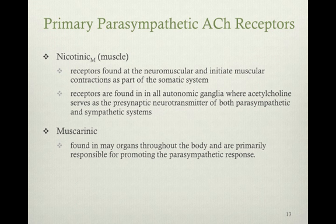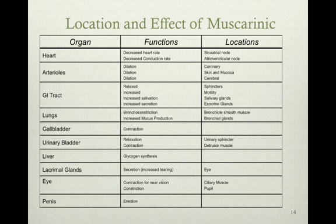Muscarinic receptors are found in many organs throughout the body and are primarily responsible for promoting the parasympathetic response. Regarding the location and effect of muscarinic areas — these are all the functions and locations of the actual muscarinic sites, which are primarily in the organs. An example is the heart.